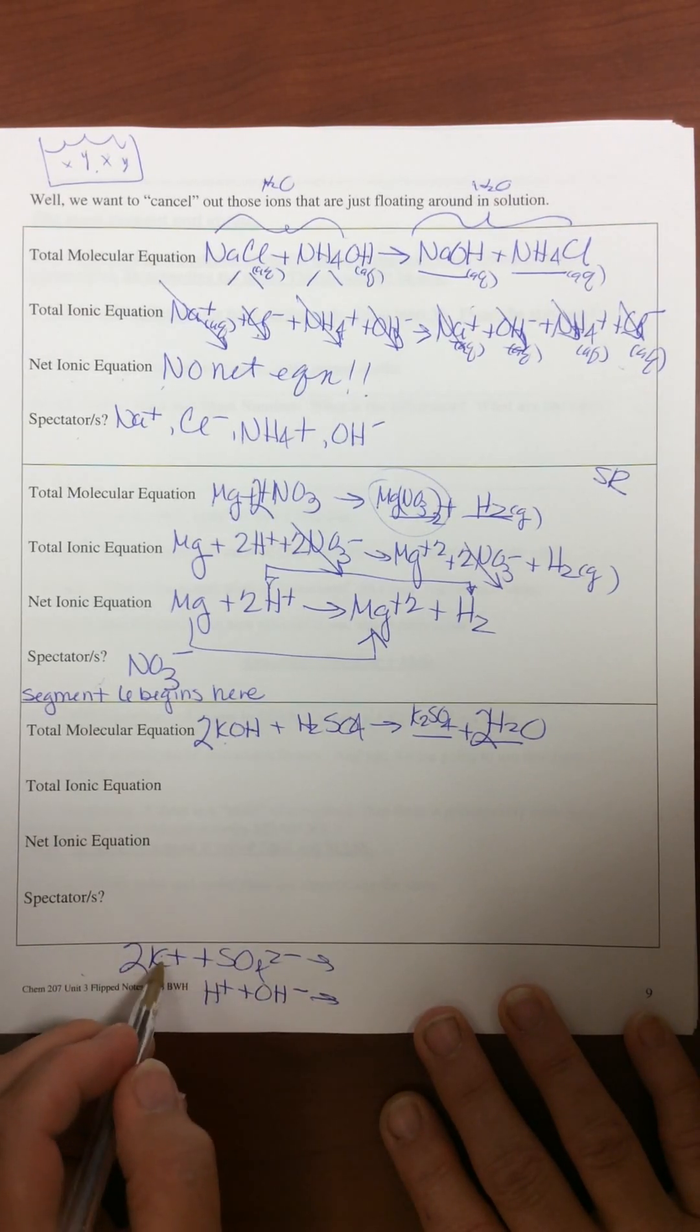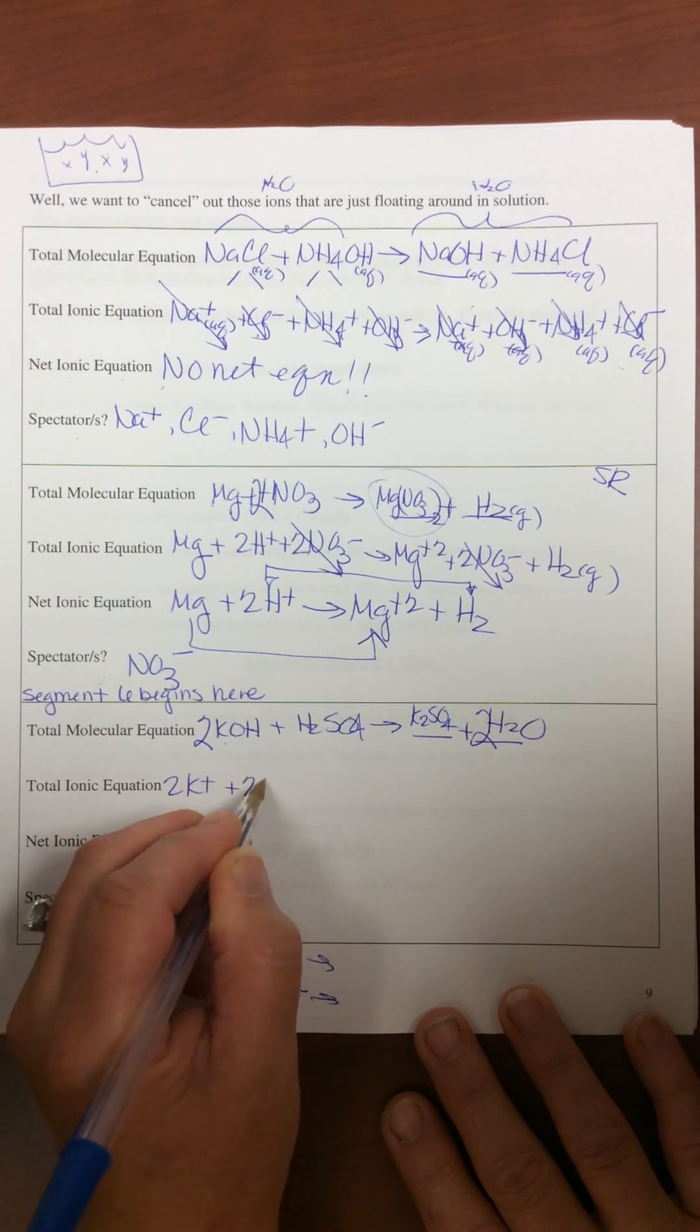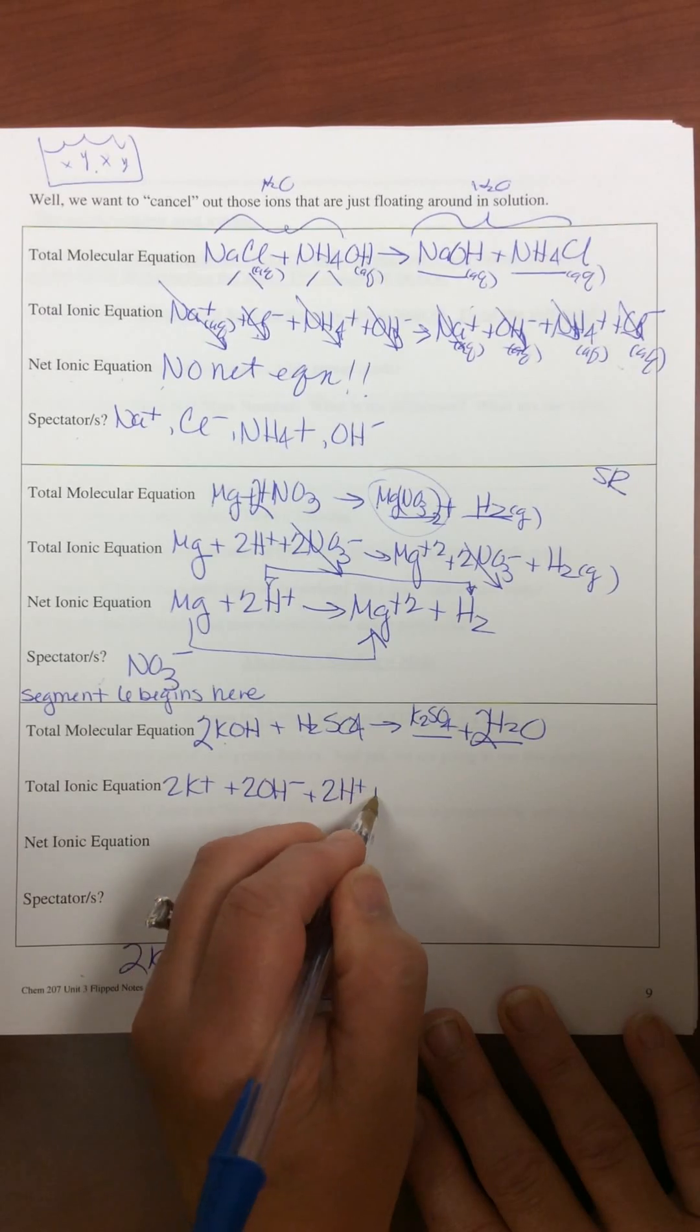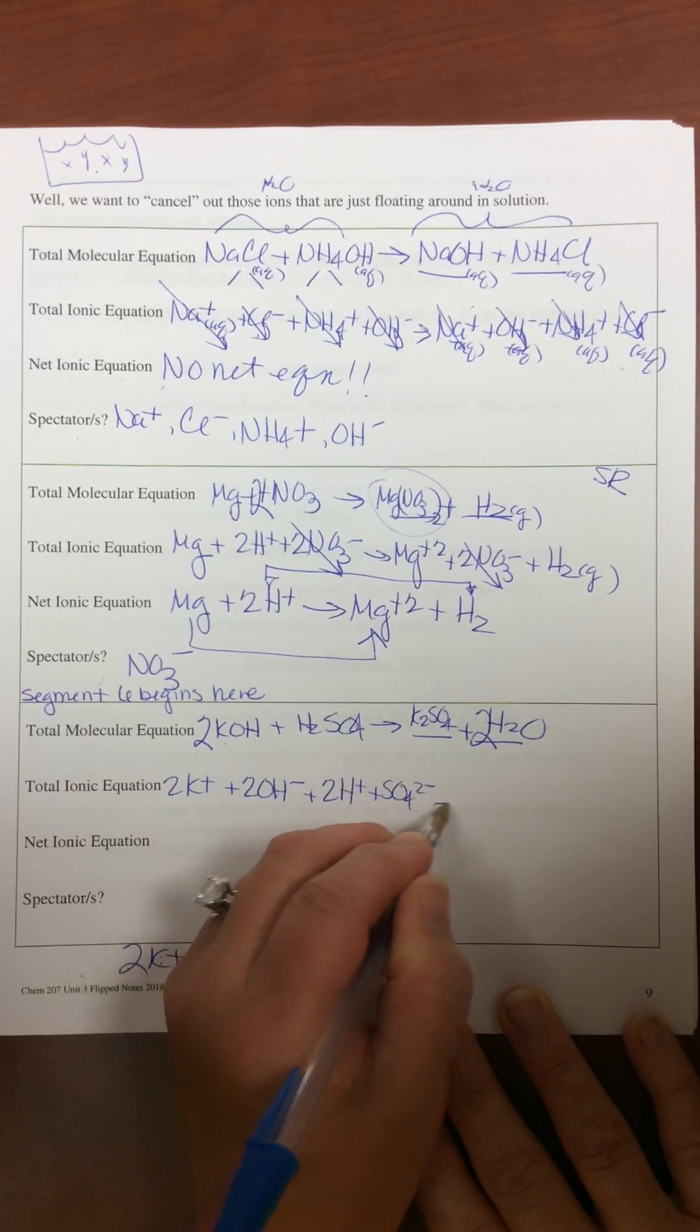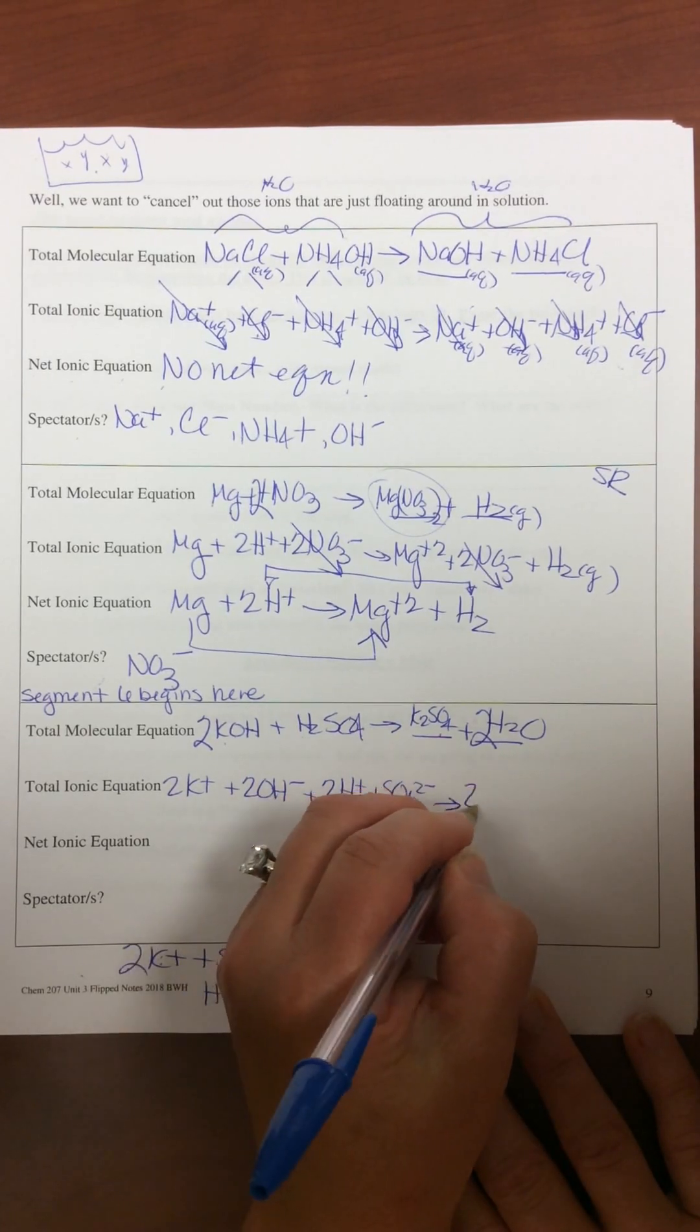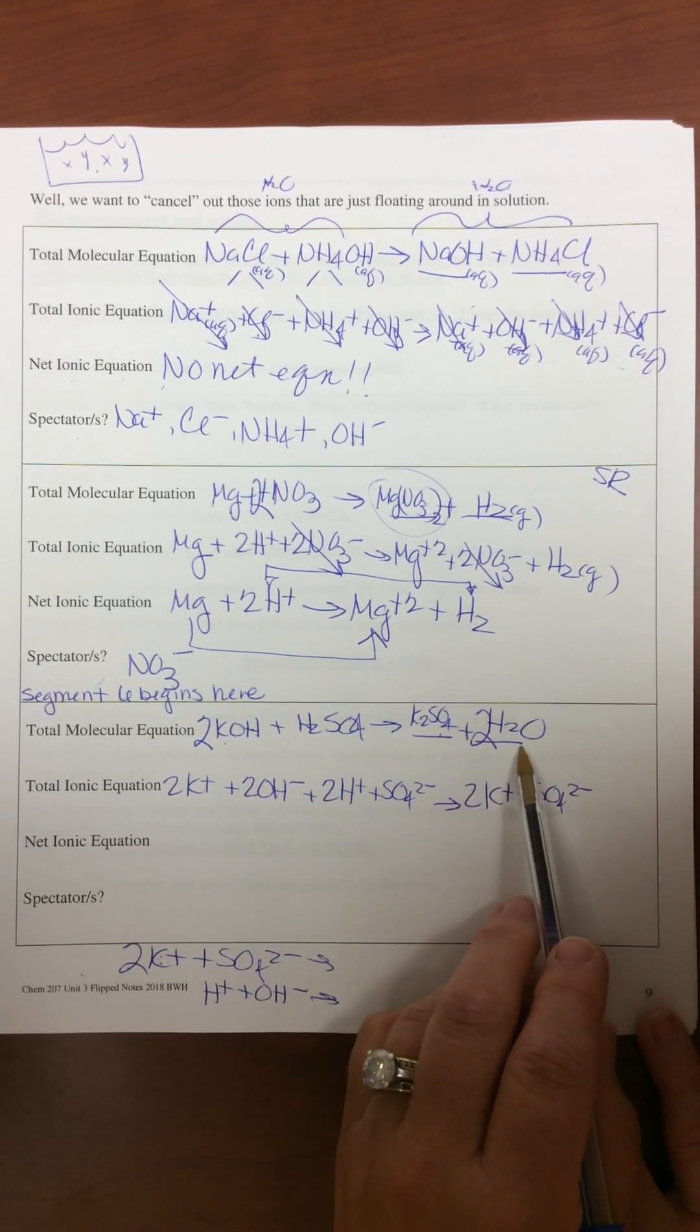KOH is ionic and soluble. That's the whole reason that we separated it. So you're going to have 2K plus 2OH minus, sulfuric acid 2H plus SO4 2 minus. Check your solubility table. You'll see that potassium sulfate is aqueous which means 2K plus SO4 2 minus.